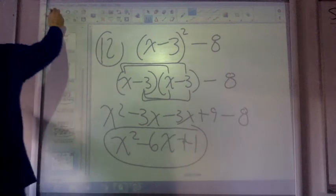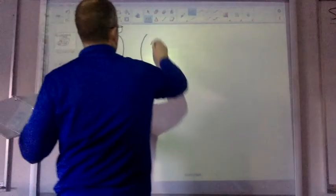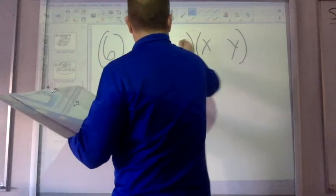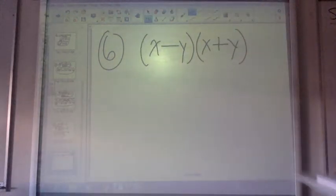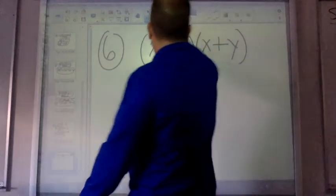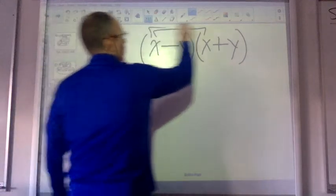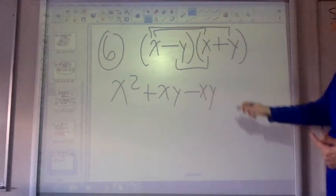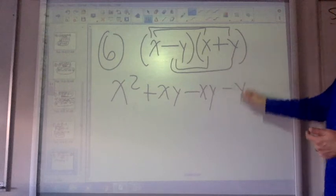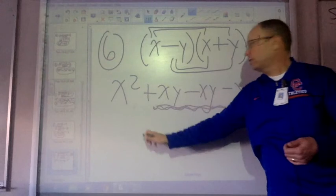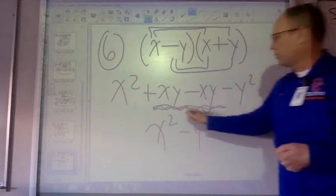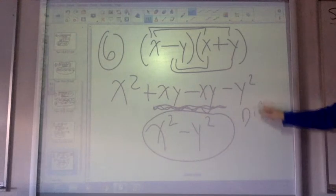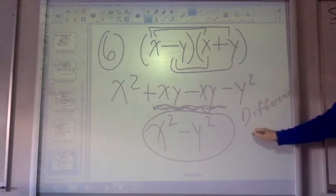Number 6: you have x and y with one sign being minus and one sign being positive. This is actually a special property. If I go x times x, I get x squared. x times y is xy. Negative y times x is negative xy. And then negative y squared. Notice that the xy terms cancel. So I get x squared minus y squared. And this is a perfect thing to lead into a name — this answer is called the difference of two squares.